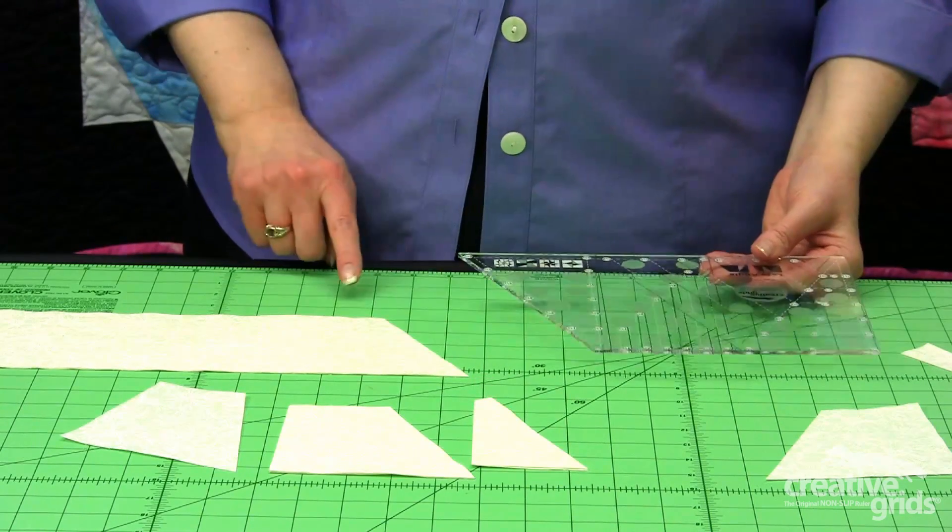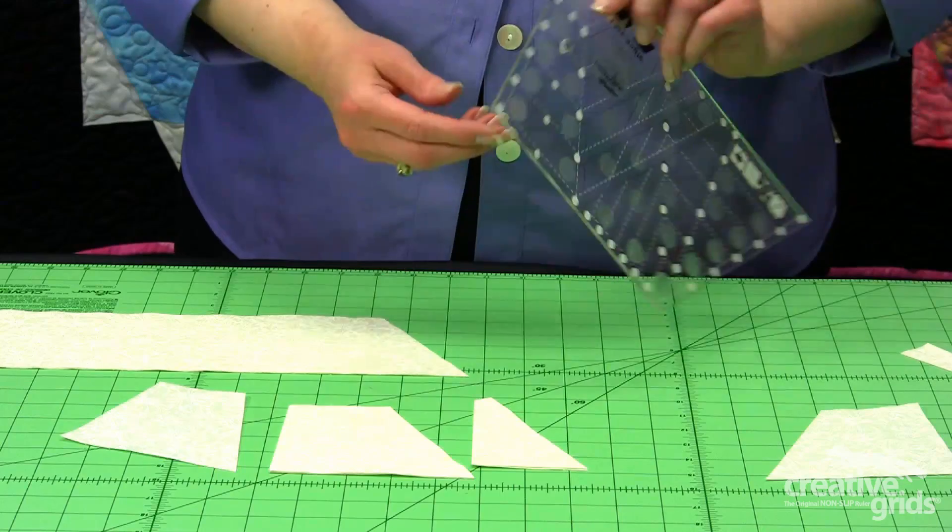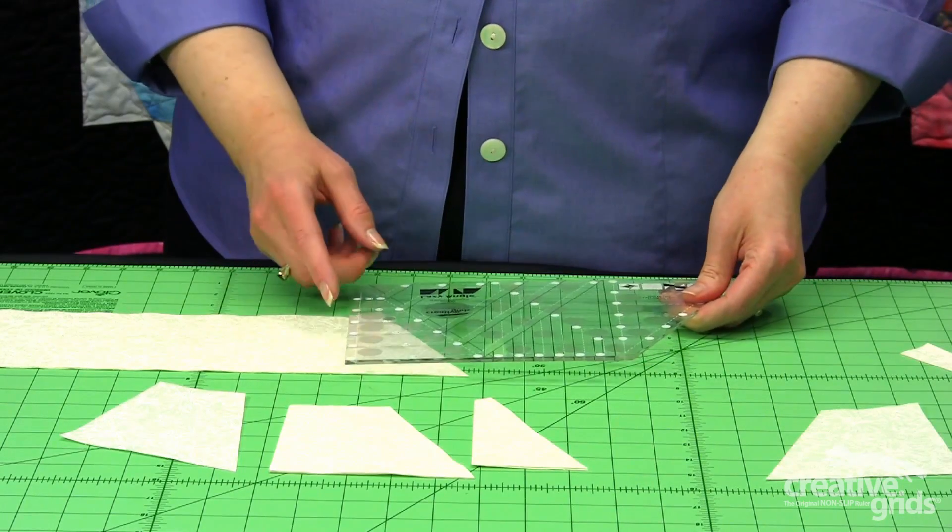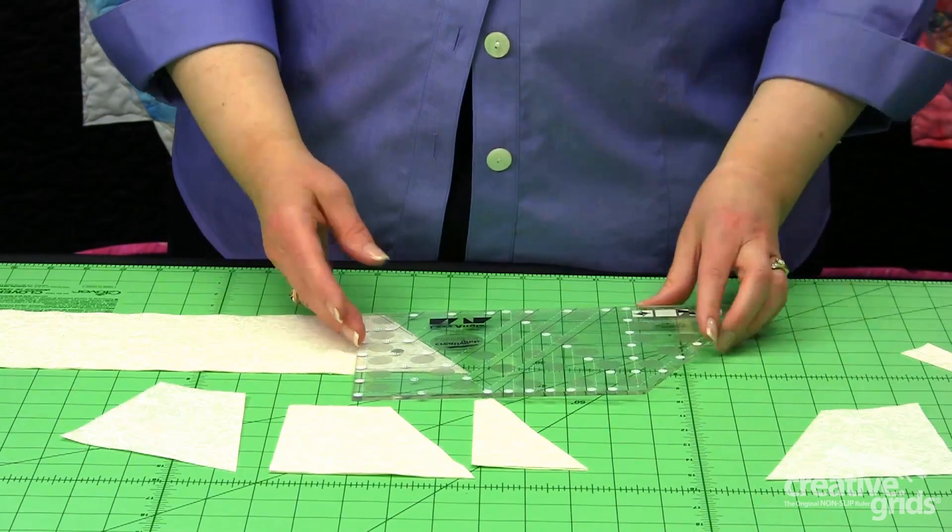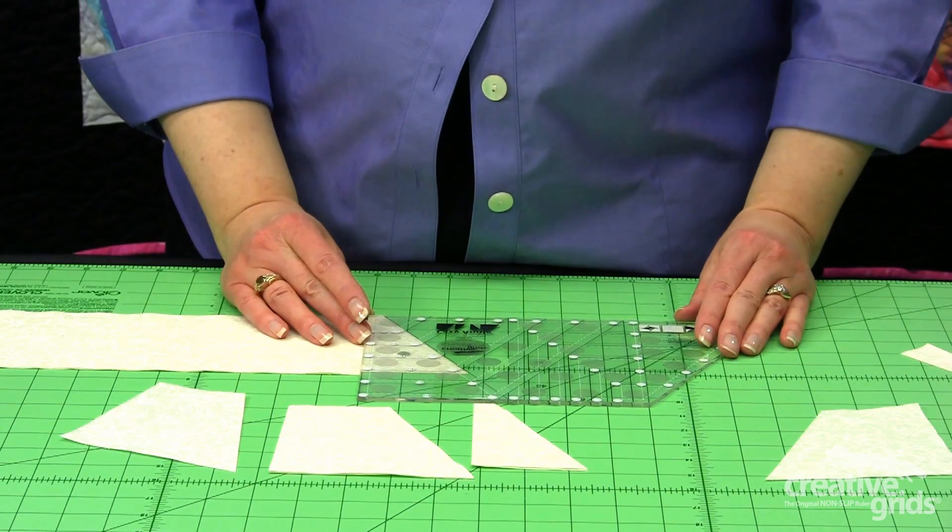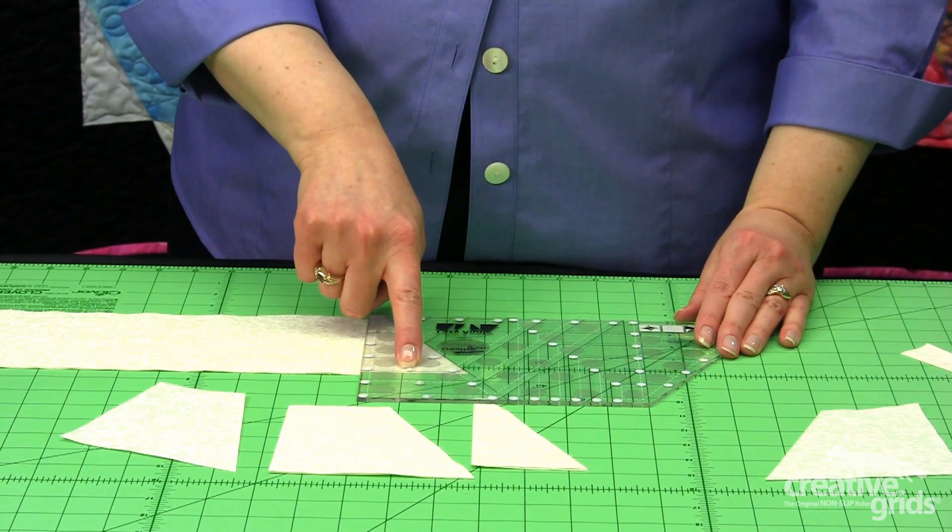For our next B cut, we have an angled edge, so we need to flip the ruler over and find the image on the square edge of the tool that matches what our fabric is doing. So here we are at the 4 1/2 inch mark.